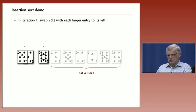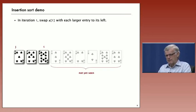It's still not in place, so we exchange it with the seven. Now we get to the beginning of the array, and once we've done that, or we've hit a smaller element, then we have everybody to the left of i in order.